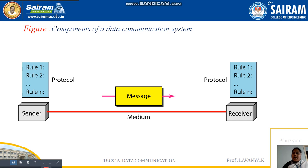The next one is components of data communication. It basically has five components that must be included for making data communication from one device to another. The five components are: the first one is sender, second one is receiver, third one is message, fourth one is transmission medium, and fifth one is protocol.